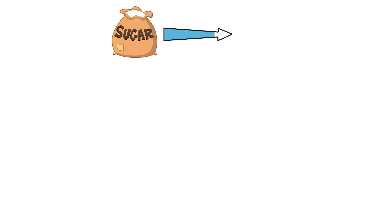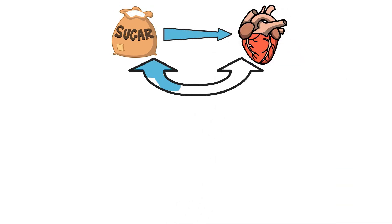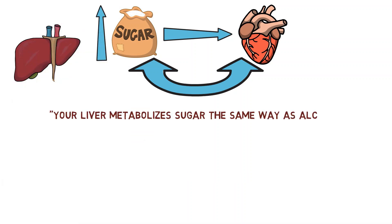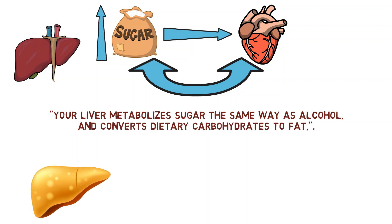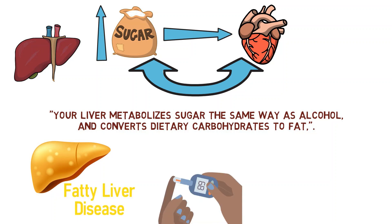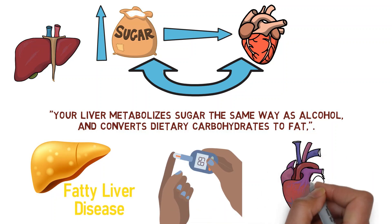How sugar actually affects heart health is not completely understood, but it appears to have several indirect connections. For instance, high amounts of sugar overload the liver. Your liver metabolizes sugar the same way as alcohol and converts dietary carbohydrates to fat. Over time, this can lead to a greater accumulation of fat which may turn into fatty liver disease, a contributor to diabetes which raises your risk for heart disease.